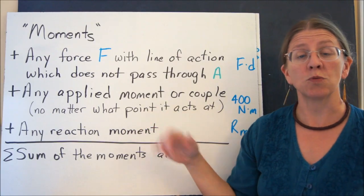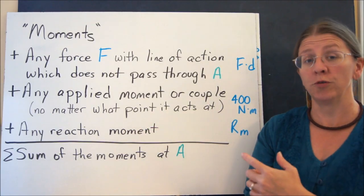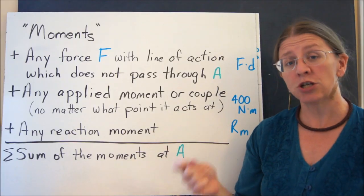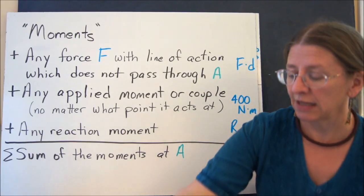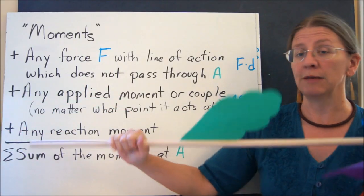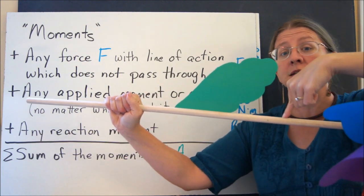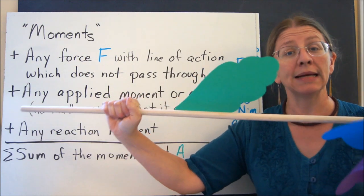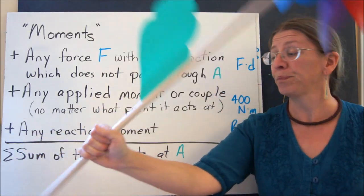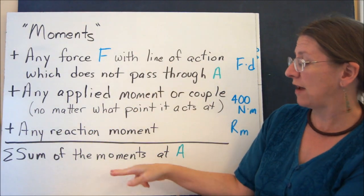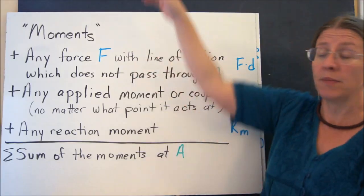We can have applied moments. That's when I actually give you one, like 400 Nm, or any reaction moment. If you have something that's being held absolutely in place so that you can push on it and it doesn't spin, then my hand is causing a reaction moment. All of those have to get added up. That's the sum of the moments at A.